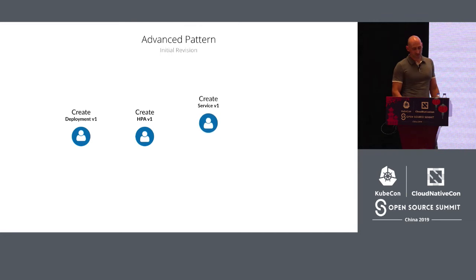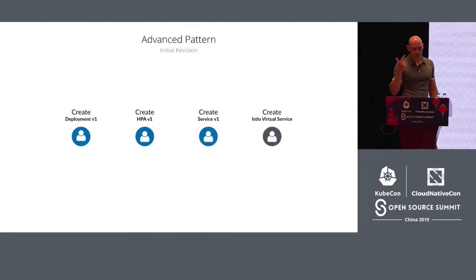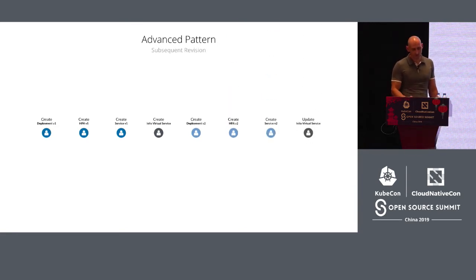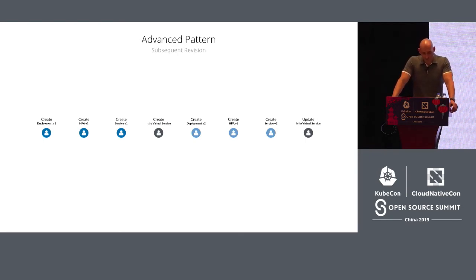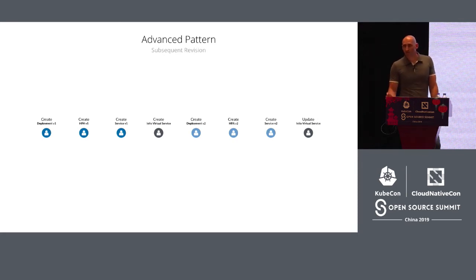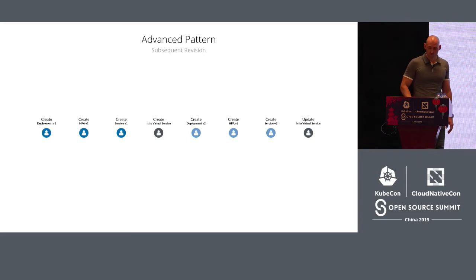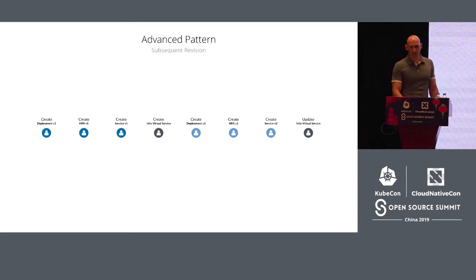Again, the advanced pattern from an actions point of view. In case of an immediate rollout, the developer has to update the Istio Virtual Service only once. In case of a gradual rollout, the developer has to update the Istio Virtual Service multiple times. This pattern is still simple to implement, but way more involved to operate. However, the developer has full control over the rollout — that is, full control over the traffic split specification.